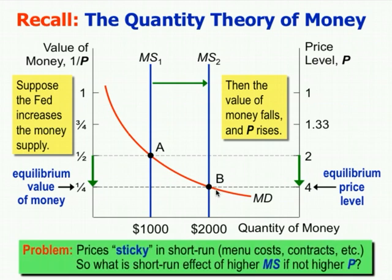The problem, of course, is that prices are sticky in the short run because of menu costs, contracts, etc. So what is the short run effect of a higher money supply if prices can't really go up proportionately? If you double the money supply, do you double the prices? In the long run the answer is yes, but in the meantime, what happens? That's where we get to the theory of liquidity preference — it says you actually see it in interest rates in the short run, which can change hourly.